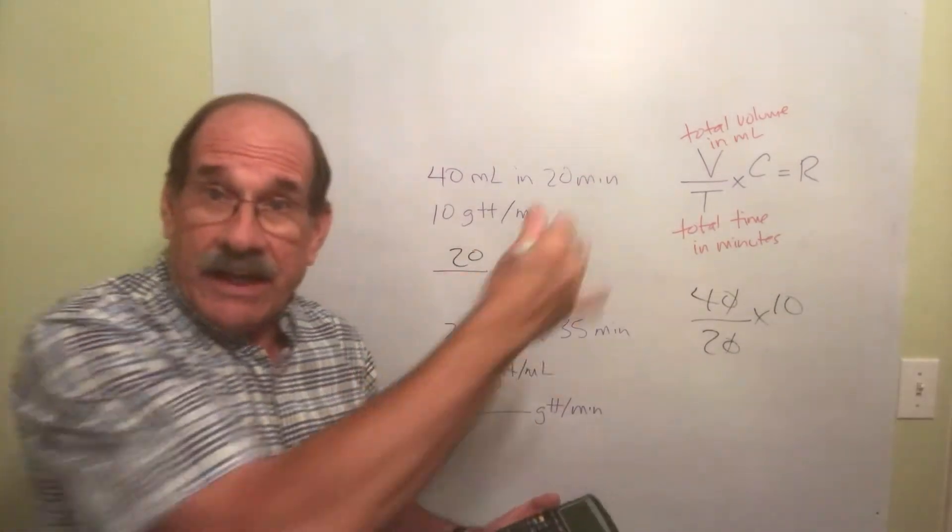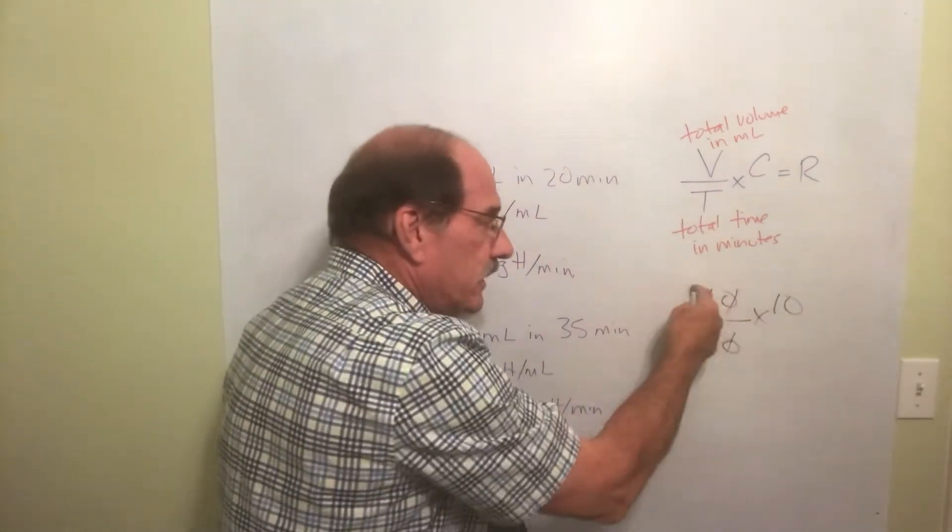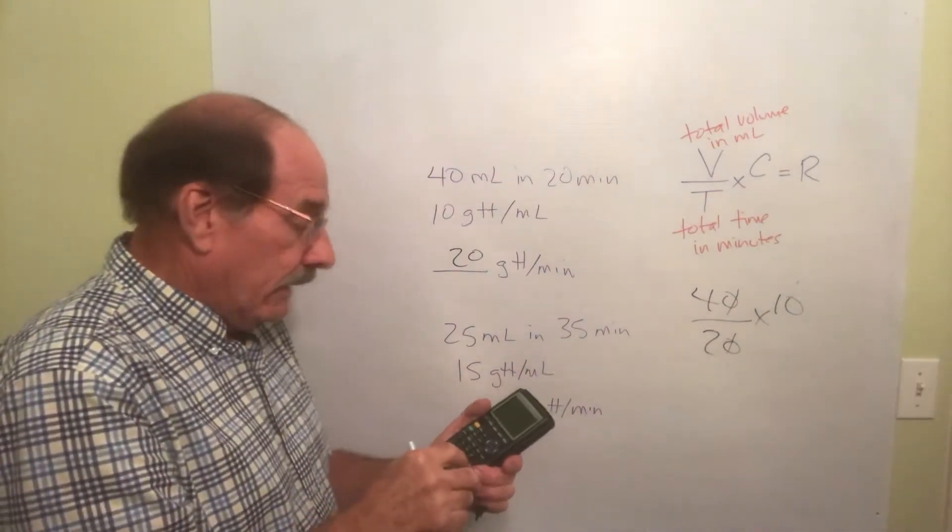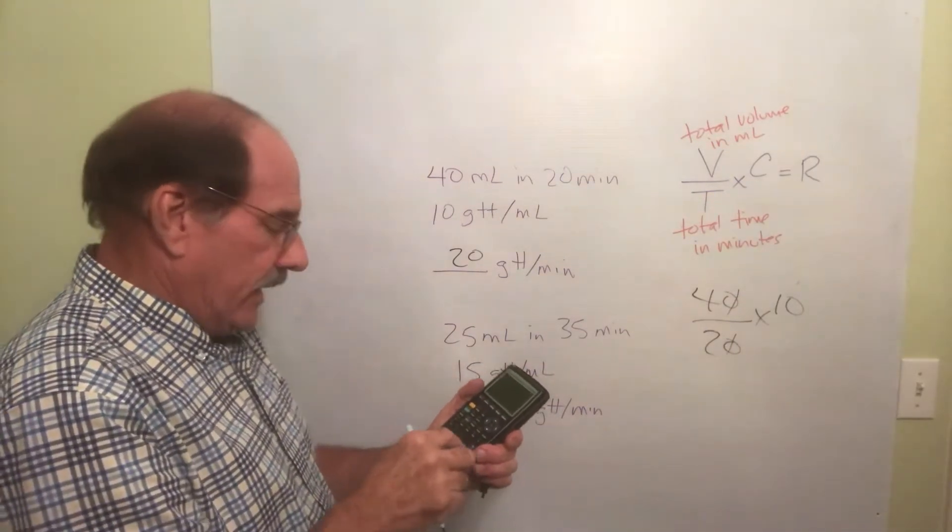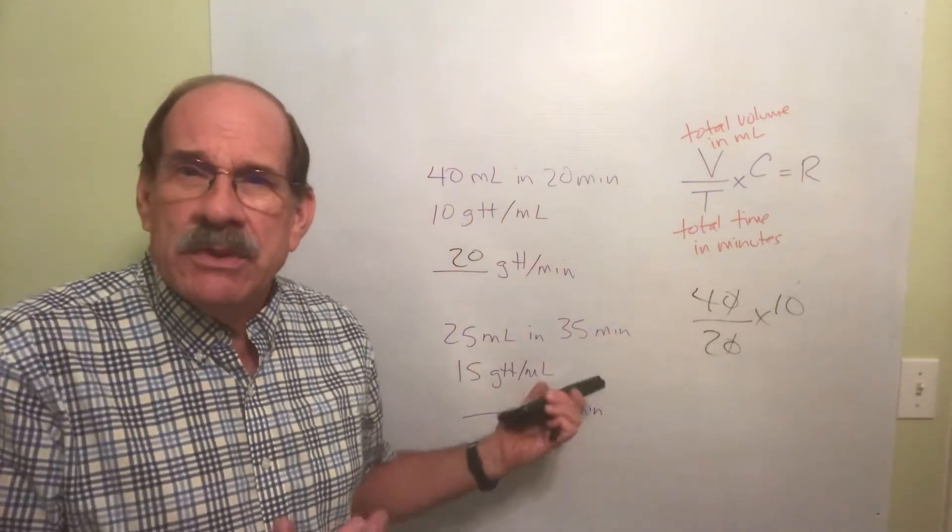Or with the canceling zero thing, I can do... You can do this divided by this times this or this times this divided by this. Either way, it's the same thing. 4 divided by 2 times 10. Again, 20. That's simpler. It's so much easier.